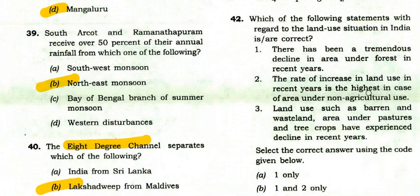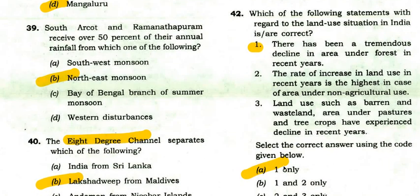Which statement regarding land use in India is correct? There has been a tremendous decline in area under forest in recent years — that is true. The rate of increase in land use is highest for non-agricultural use. Land under pastures and tree crops has experienced decline — not true. So the answer is A: statement 1 only.